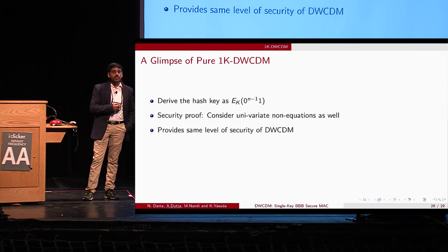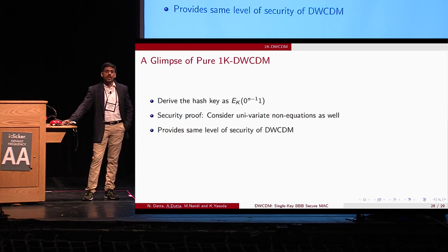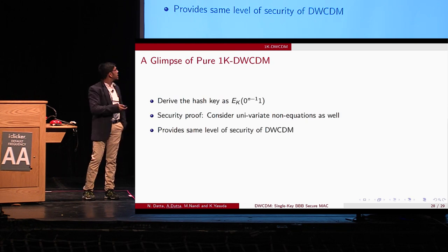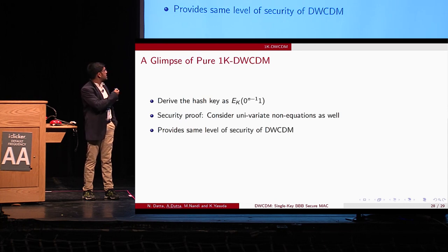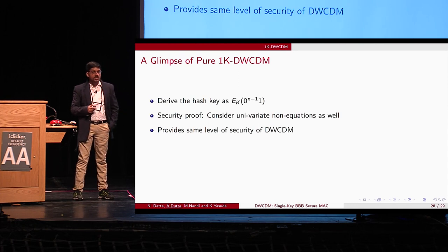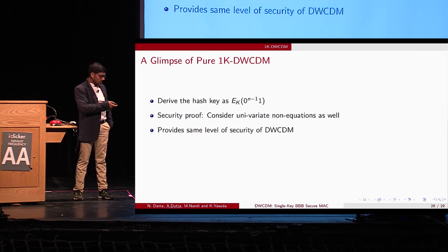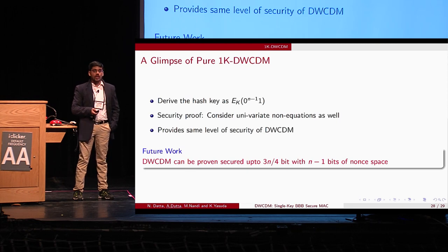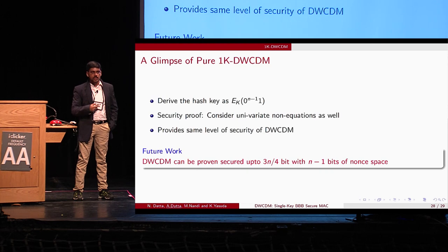Finally, we present a pure single-key variant of DWCDM called 1K-DWCDM, where the hash key is derived as the block cipher output of a fixed string — specifically 0^{n−1}1. The security proof of 1K-DWCDM is similar to DWCDM and provides the same security level. As future work, we are hopeful that DWCDM can be proven secure up to 3n/4 bits with nonce space n−1 bits, and we are currently working on this.